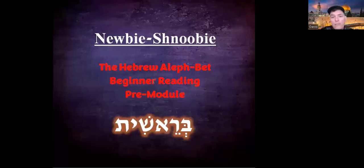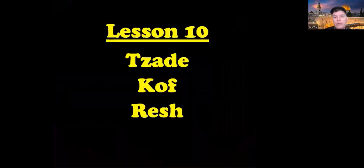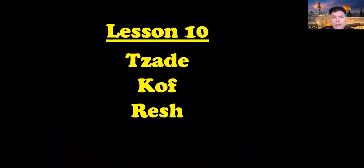Shalom lakulam, welcome back everybody to our Hebrew alefbet beginner reading pre-module. We have progressed through the course all the way to lesson number 10, so today we're going to be introducing three new consonants you've not seen before. The first one is called tsade, and there is a final form to the tsade called tsade sofit. There's a kof, and there is a resh.